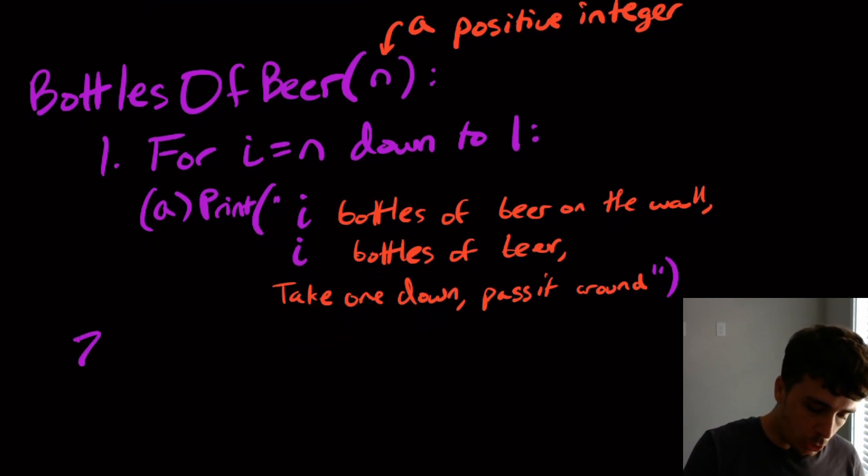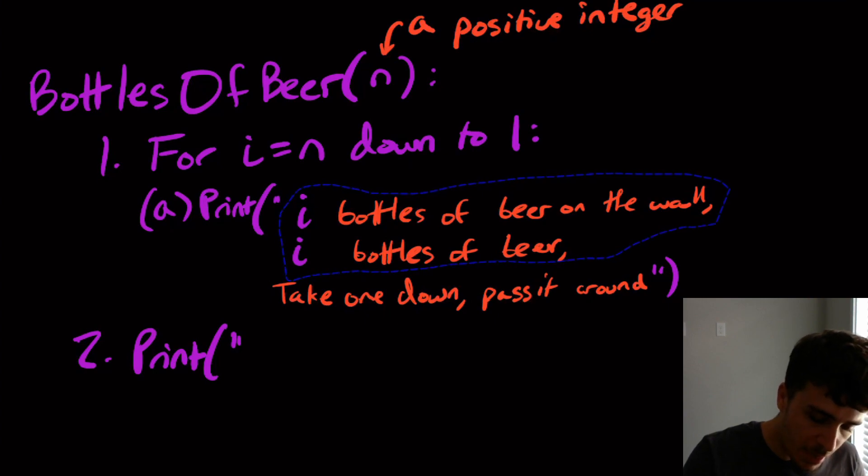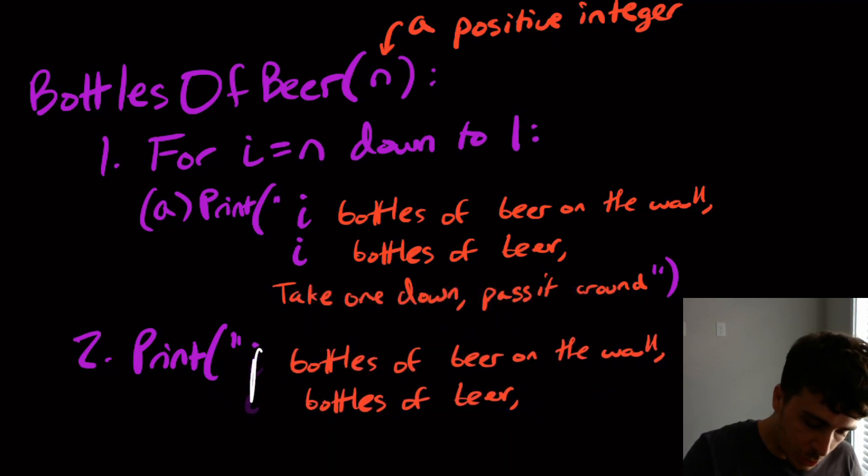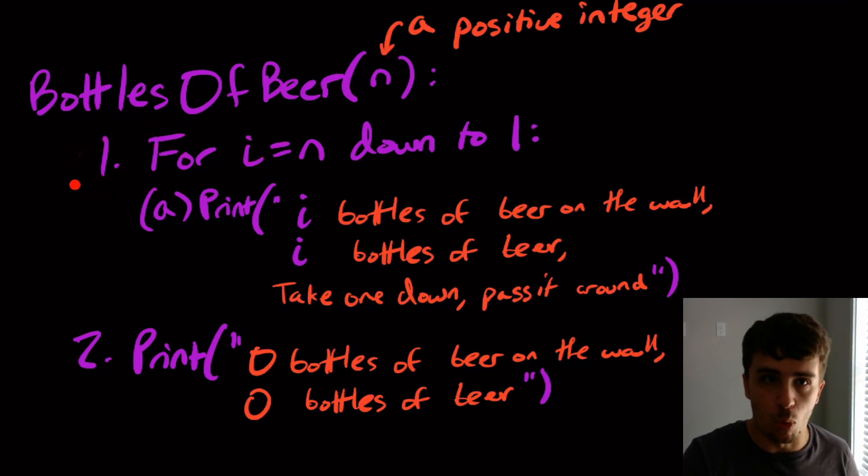And then as a final measure, what we want to do is to print the final thing. Let's just say the first two lines, but with zero. Again, there are many things that you could print, it's an arbitrary function. But I'm going to put zero in both of these cases right here. And so the zero here is outside of the for loop. So notice that the for loop is on step one, and step two, which is outside of it, is dealing with exactly zero bottles.